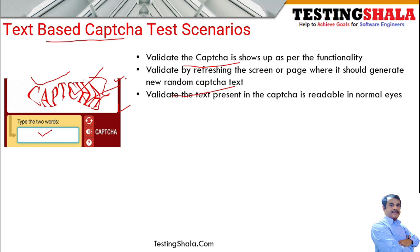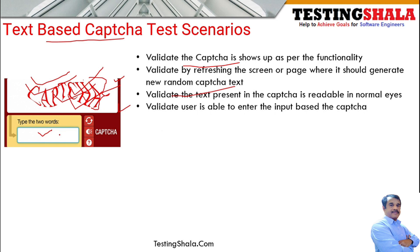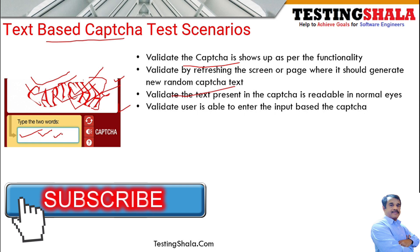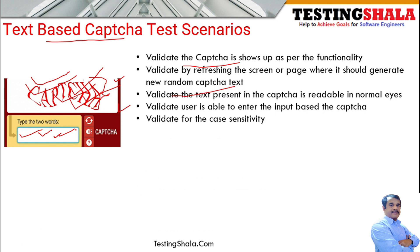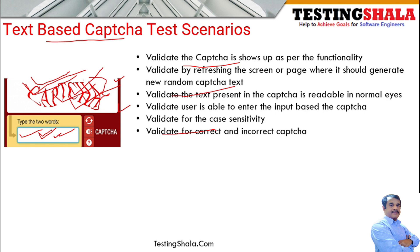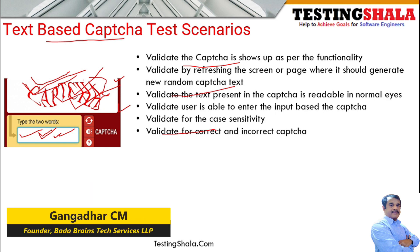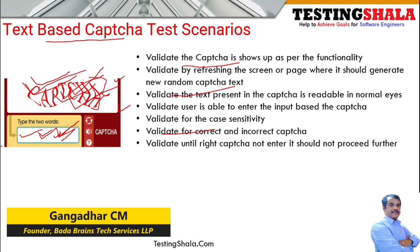The third scenario is that whatever characters or text is displayed in the CAPTCHA should be in a readable format, visible to the normal eye, so the user can enter it in the text field. You should also validate the text field as per text field guidelines. Additionally, if there is case sensitivity in the CAPTCHA text, the user must enter it with the same case. You should validate both correct and incorrect CAPTCHA entries — correct should proceed to the next page, incorrect should throw an error message.